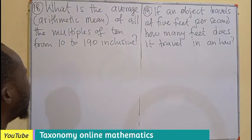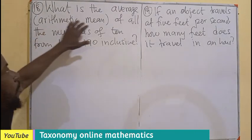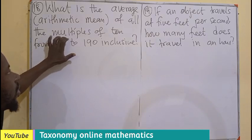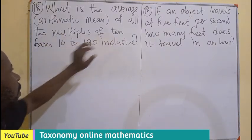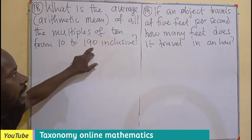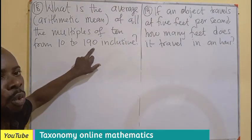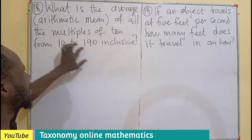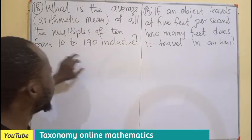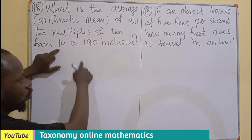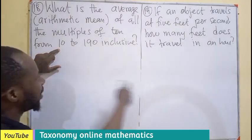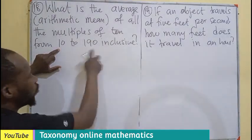So what is the average, that is the arithmetic mean, of all the multiples of 10, from 10 to 190 inclusive? Meaning starting from 10, ending at 190. Since we are saying multiples of 10, meaning we are having 10, 20, 30, 40, 50, in that order, up to 190.